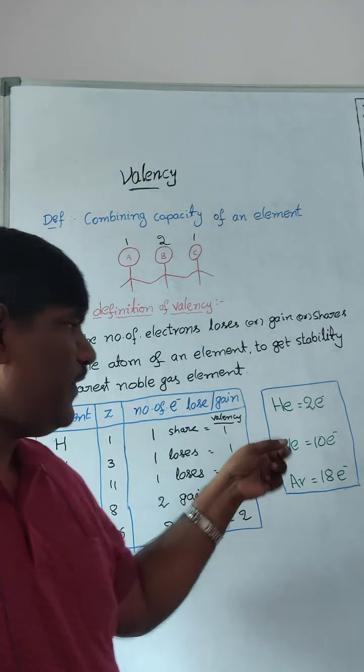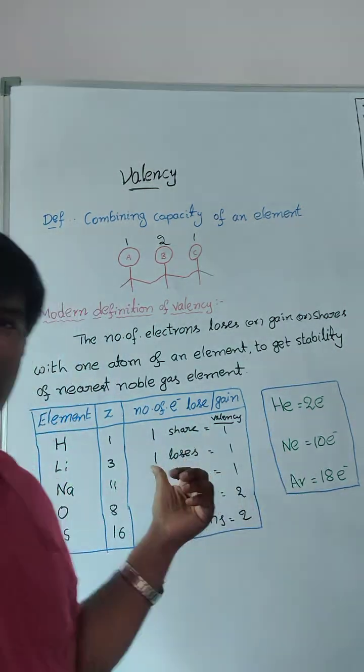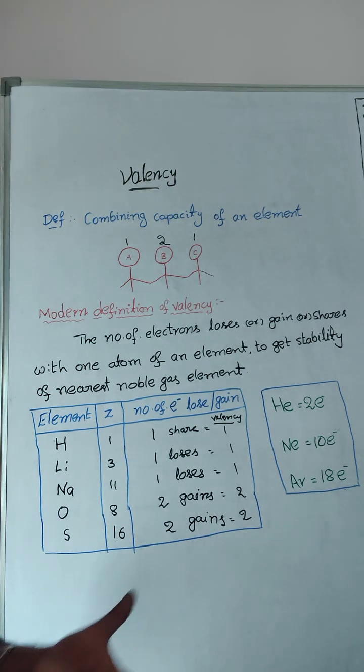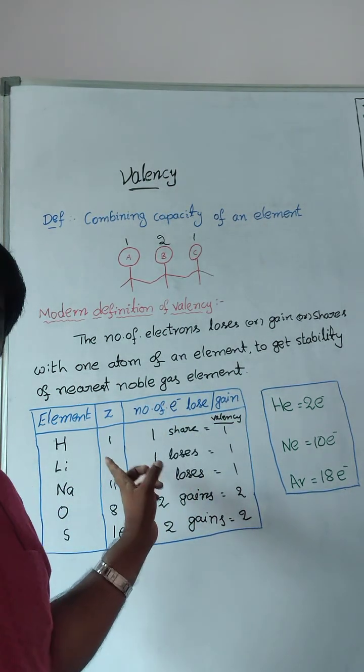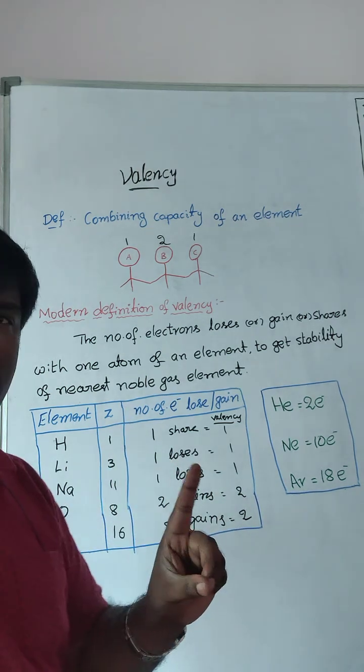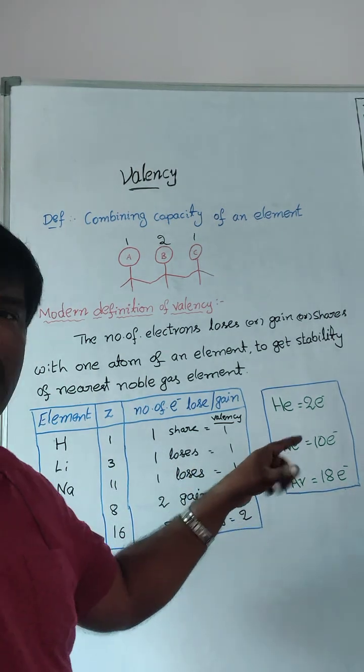So, if I consider Neon is near to the lithium, at that time, if you observe, helium, what gets stability means it should lose, lithium should lose only one electron. It should get Neon means it should lose...